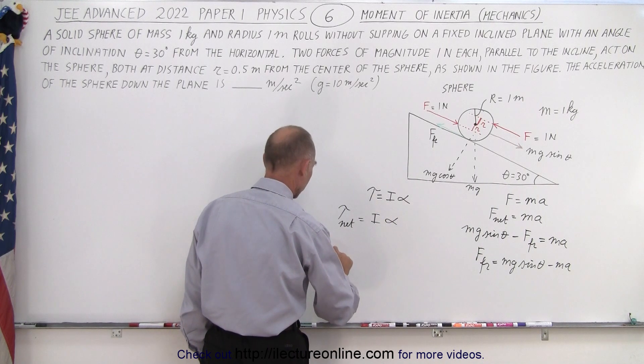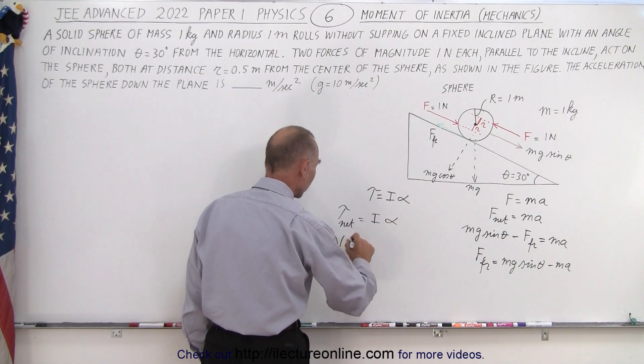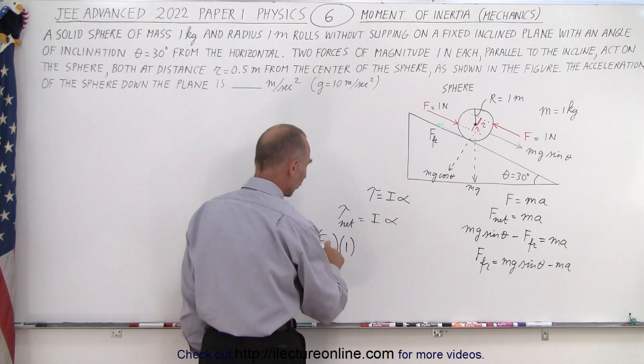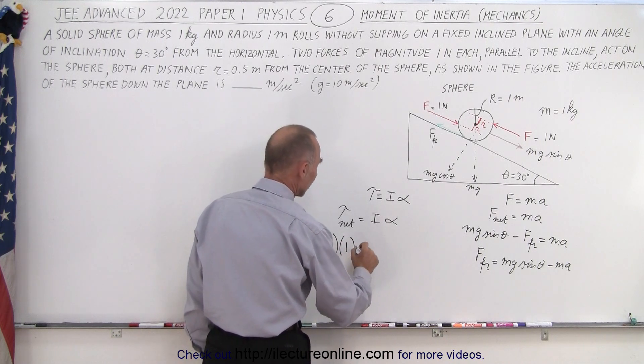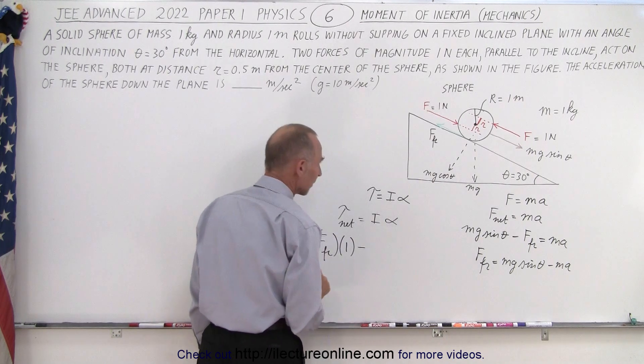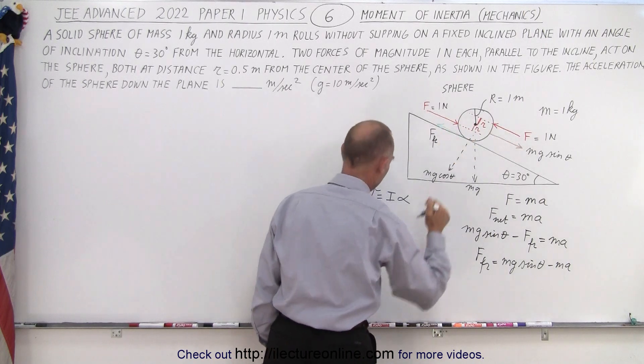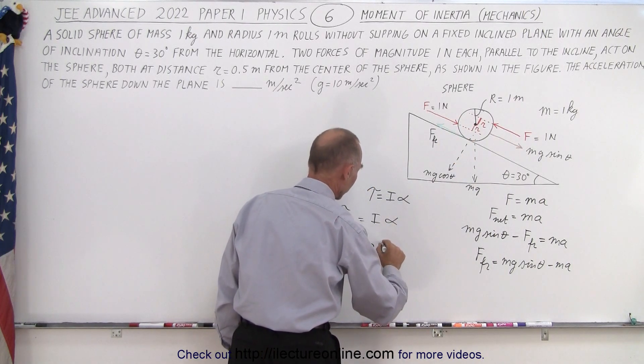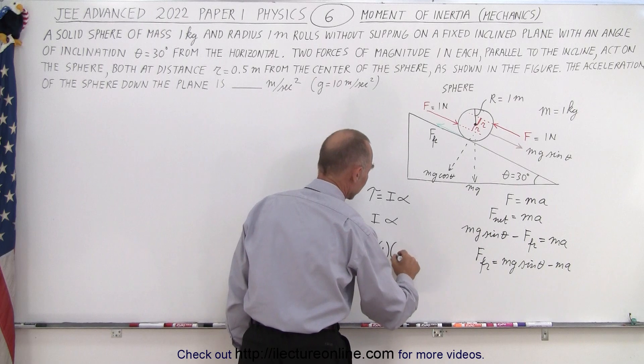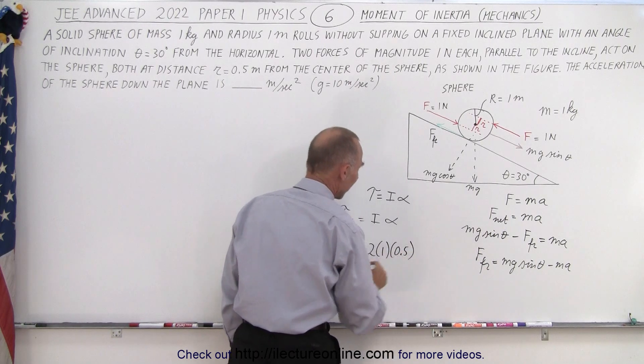So, we have force friction times one meter, because it's force times distance. And we subtract from that the forces caused by these two right here. So, we have two forces, they're one newton each, and they act at a distance of 0.5 meters.